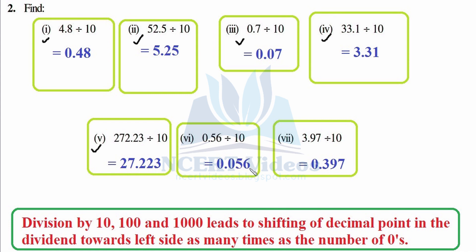Writing 56 as it is, only one shift again towards the left. Initially we were before 5, so when we move here we have to introduce one more zero — that is why this zero came, and we write this zero prior to the decimal. Last part: 397 as it is, one decimal shift, initially we were here, so we moved one place and the answer is 0.397. That's your second question.